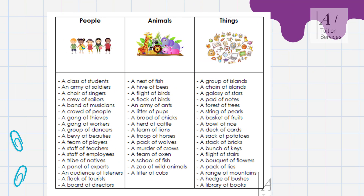Here we have a table with a group of collective nouns. Remember, collective nouns represent a group of something — whether it be a group of people, a group of animals or a group of things. When we talk about collective nouns, we usually classify these groups by giving them names.